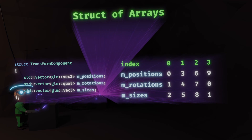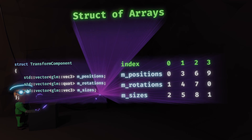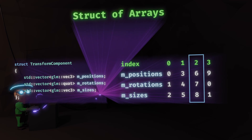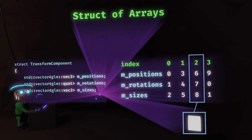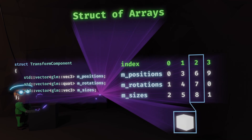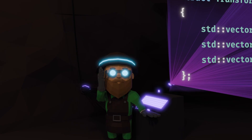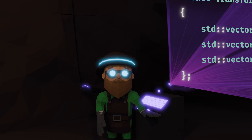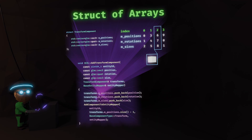In our SOA, the same index across all the arrays represents the same object. So for instance, in our transform component, index 2 in these arrays would point to the same cube. It sounds really good, but it's so hard to work with. And I'm not a good enough developer yet to build the infrastructure to support something like this. That's where all this mess came from.